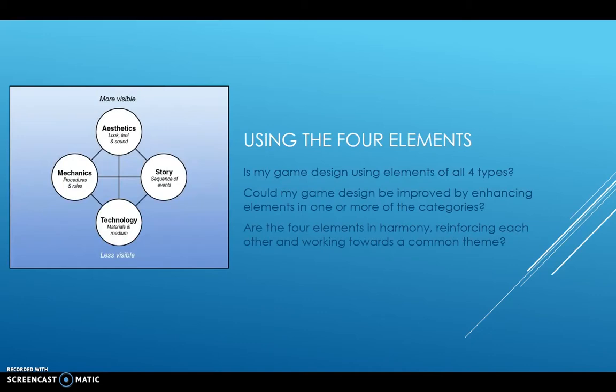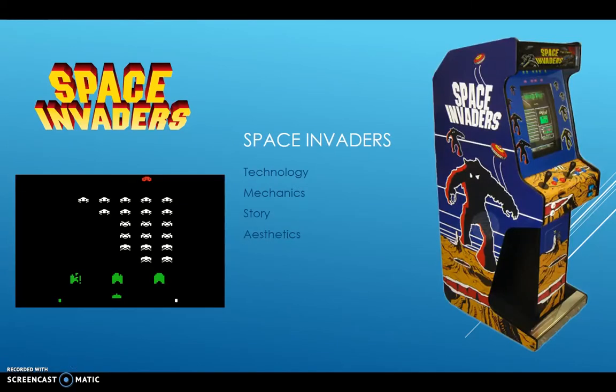Using the four elements framework, it's a very good diagram to look at to see how you're using mechanics, story, aesthetics, and technology. Are they all being used to their full potential to create the best game you can? Are they in harmony, reinforcing each other, and working towards a common theme? To illustrate this, I'll use the example of Space Invaders.